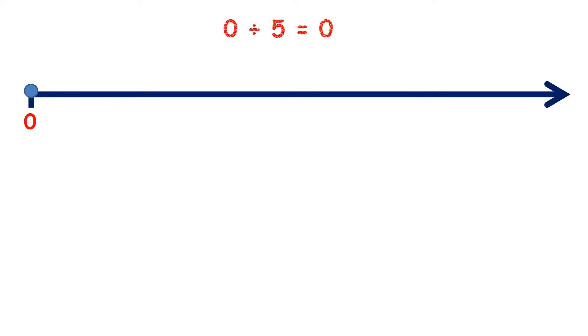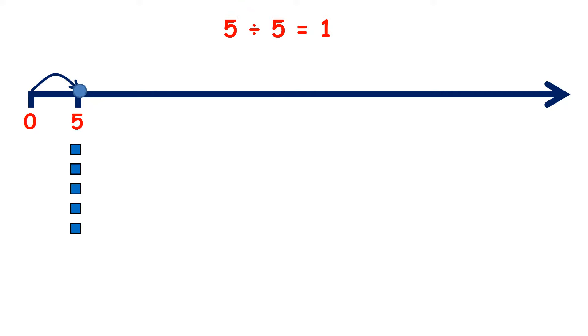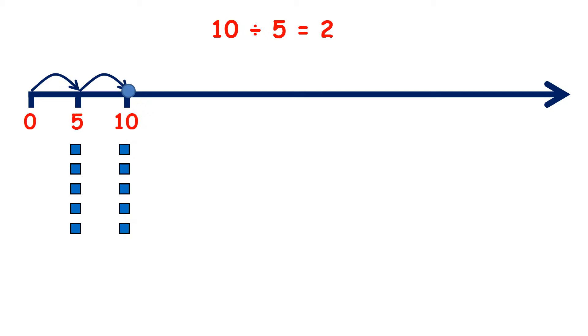Now we're going to learn our division facts for the 5 times table. 0 divided by 5 is 0. 5 divided by 5 is 1. 10 divided by 5 is 2. So if we have 10, we can make 2 groups of 5.